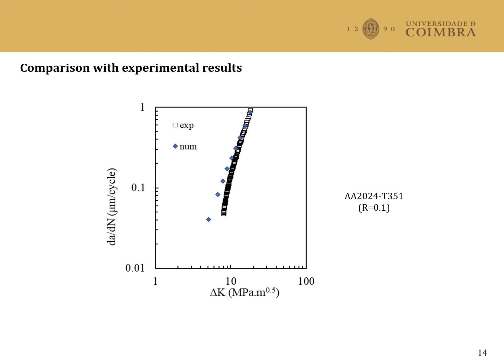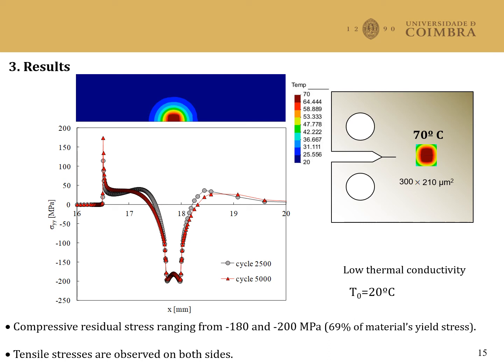In order to produce a residual stress field, the temperature was increased in a small region at the initial crack tip position. The increase was from 20 to 70 degrees Celsius, and this produced the field represented in this plot. There is a region with compressive residual stresses, which are about 69% of the material's yield stress. On both sides there are tensile stresses, and the transition from compressive to tensile stresses is relatively gradual. A low conductivity was assumed for the material in order to keep the temperature field during crack propagation.